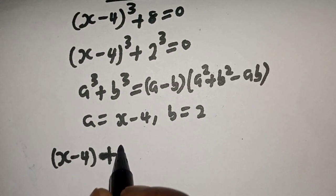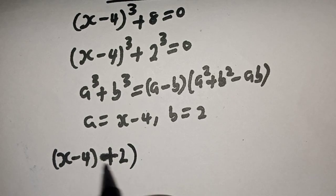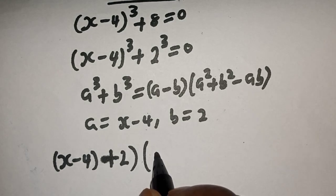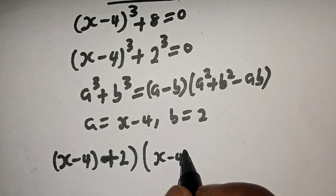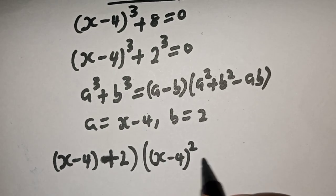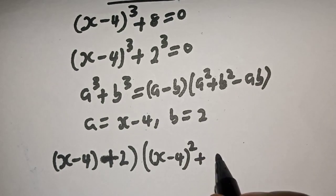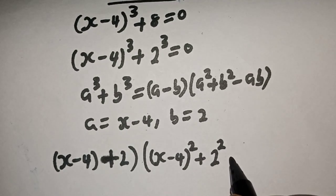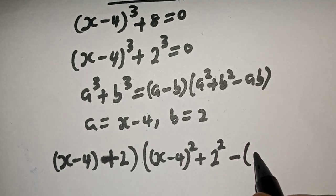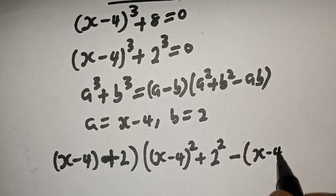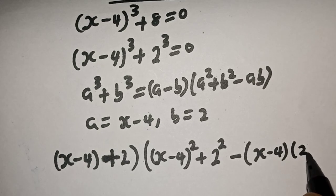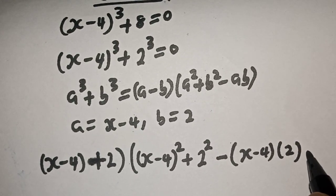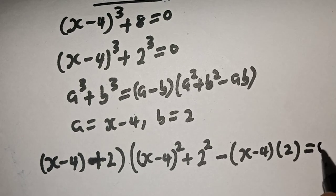So we get x minus 4 plus 2, multiplied by a squared — that is x minus 4 squared — plus b squared, which is 2 squared, then minus ab, which is x minus 4 multiplied by 2, everything equal to 0.